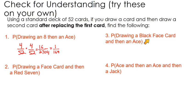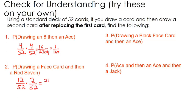Let's find the probability of drawing a face card and then a red seven. There are three face cards in every suit and four suits, so there are 12 face cards out of 52. For a red seven, there's the seven of diamonds and the seven of hearts — two ways out of 52. Multiplying straight across gives 24 out of 2704, which simplifies to three over 338.